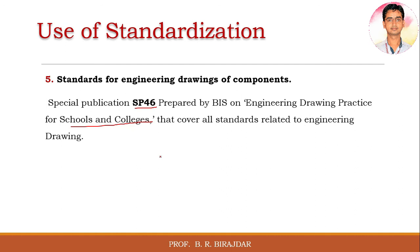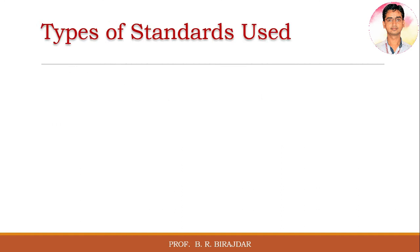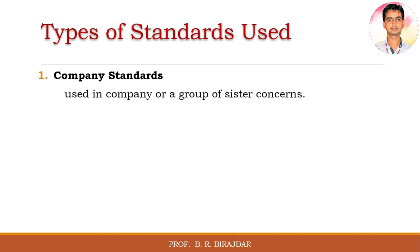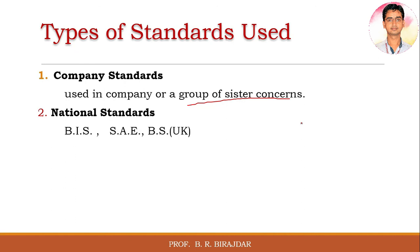Now we will see the different types of standards used regularly. The first is the company standard, which is used within a company or a group of sister companies. If a company has four or five branches in different states, all follow one standard limited to that particular company. The second is the national standard — for example, BIS (Bureau of Indian Standards), SAE (Society of Automotive Engineers), or BS (British Standards). In India, we follow BIS, and national standards vary country to country.